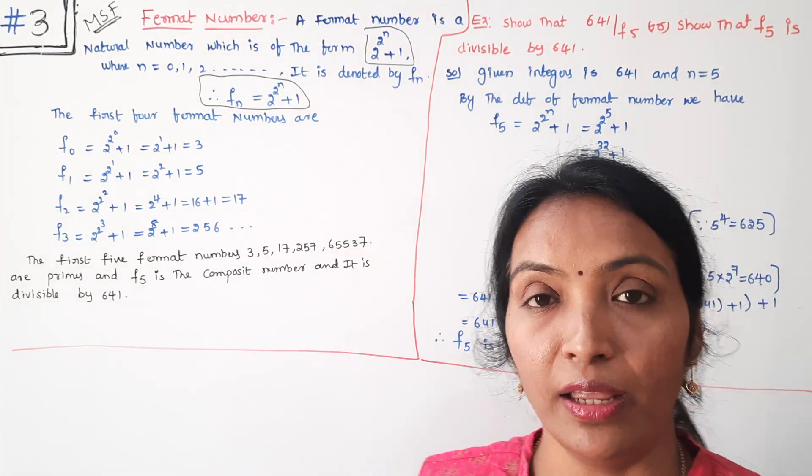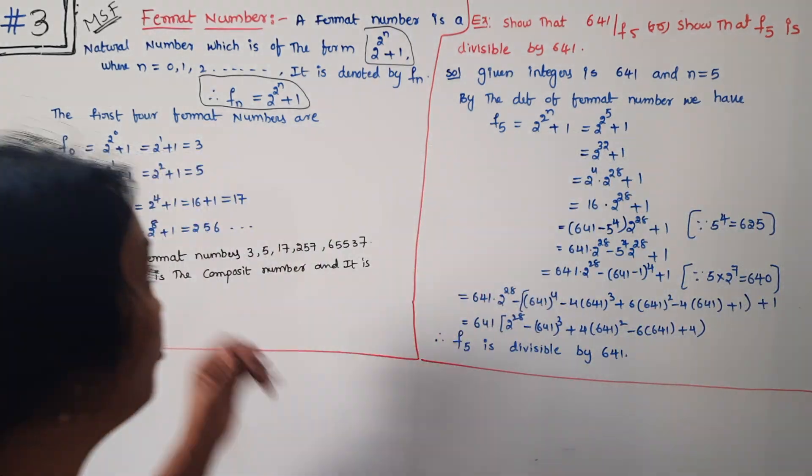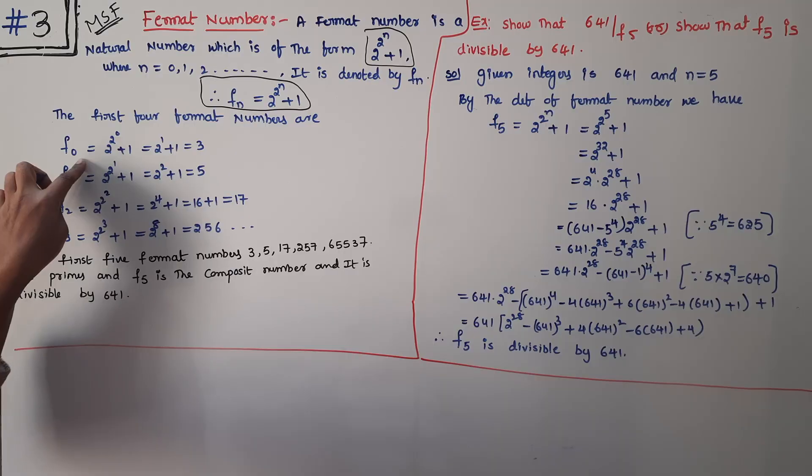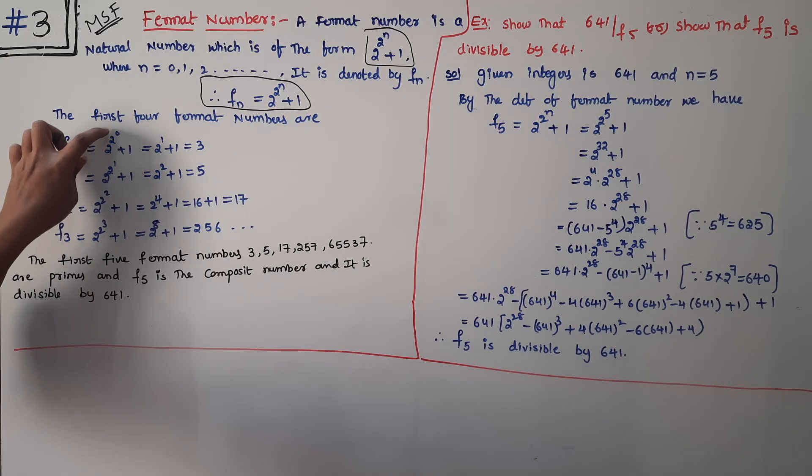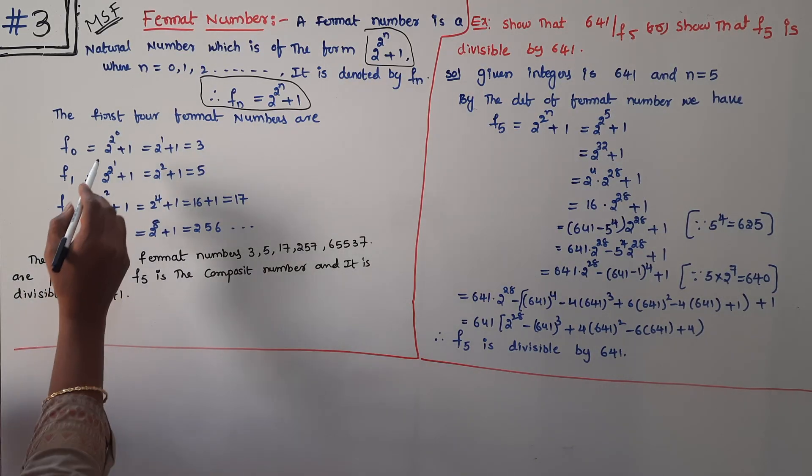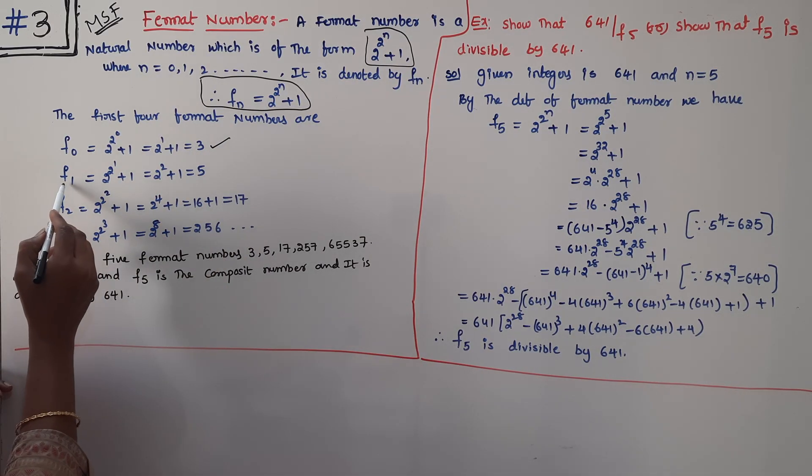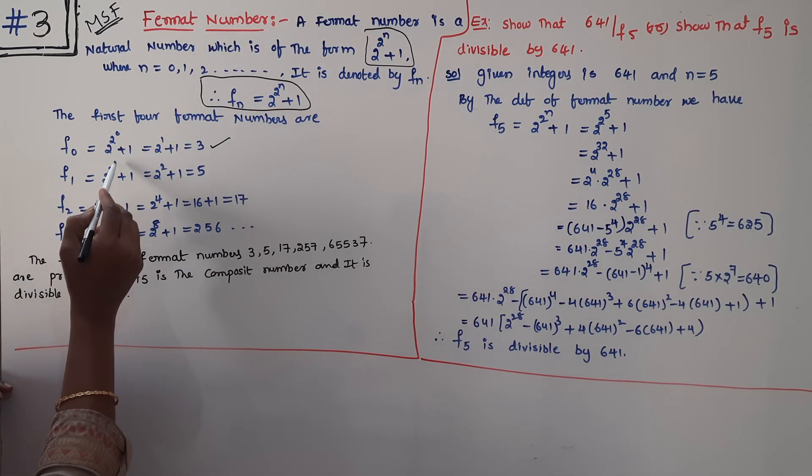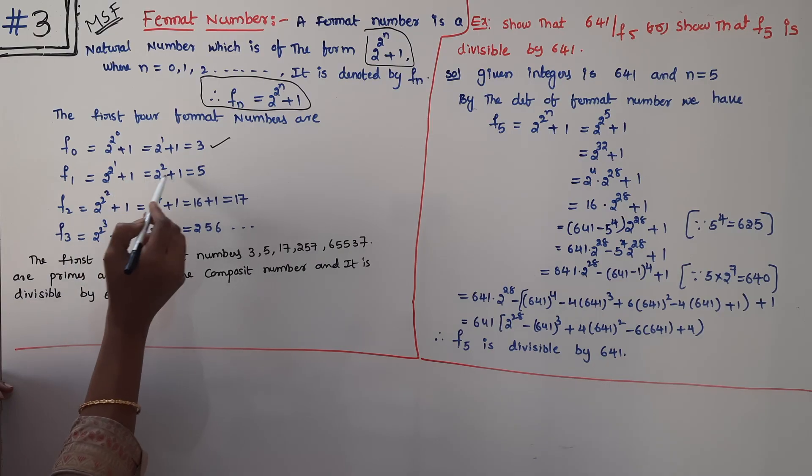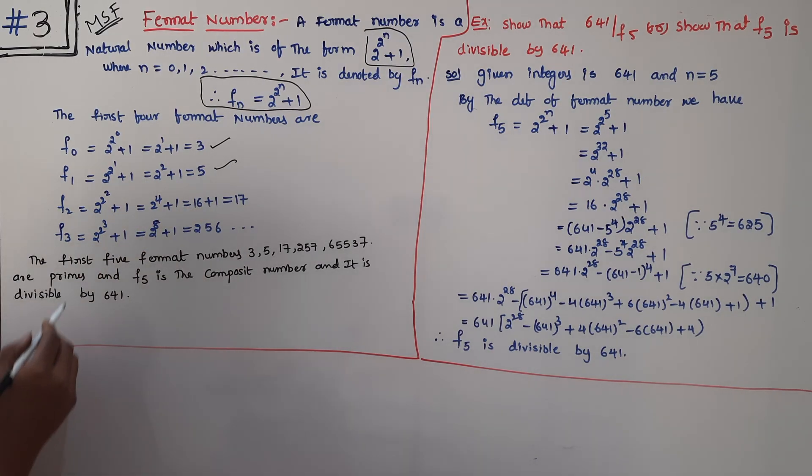First of all, the first five Fermat Numbers. F_0: n is equal to 0, so 2^(2^0) + 1. 2^0 is 1, which gives us 2^1 + 1 = 3. Now F_1: n is equal to 1, substitute 2^1 is 2, 2 squared is 4, 4 + 1 = 5.